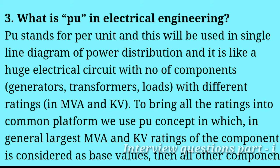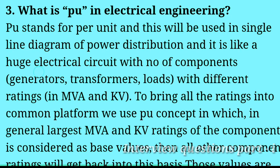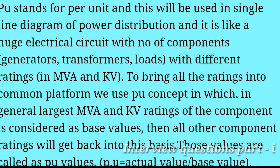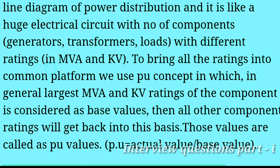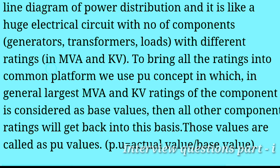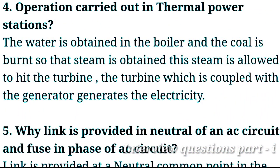In the per unit system, the largest MVA and kV ratings of the components are considered as base values. All other component ratings are then converted relative to these base values — those converted values are called per unit values. Per unit value is obtained by dividing the actual value by the base value.